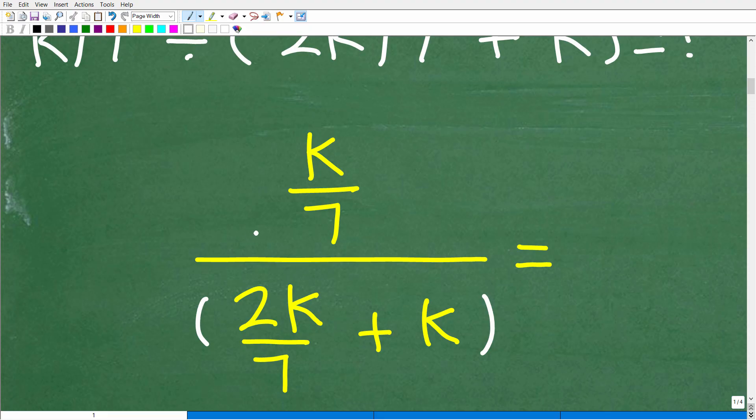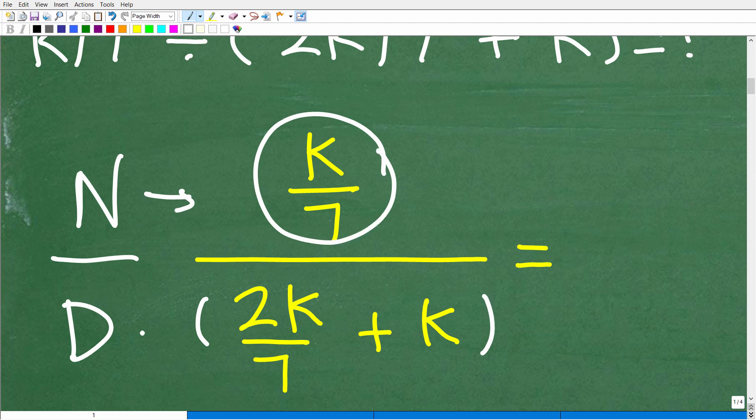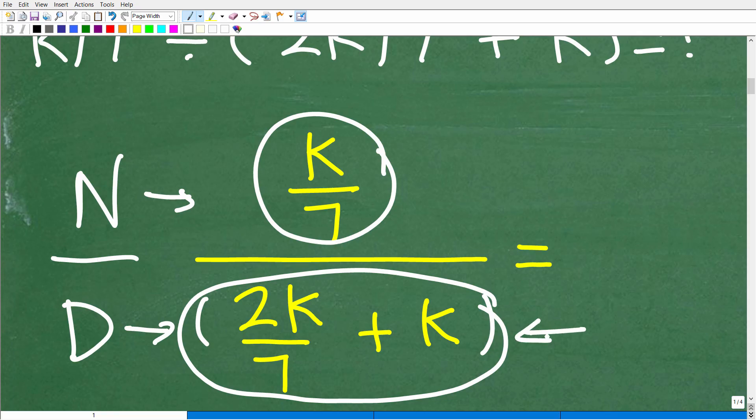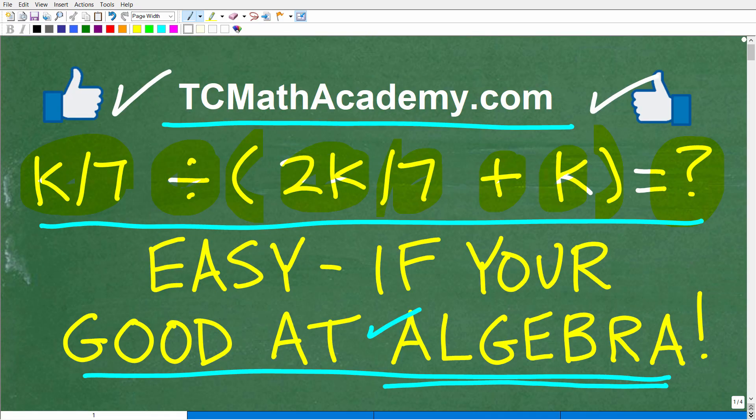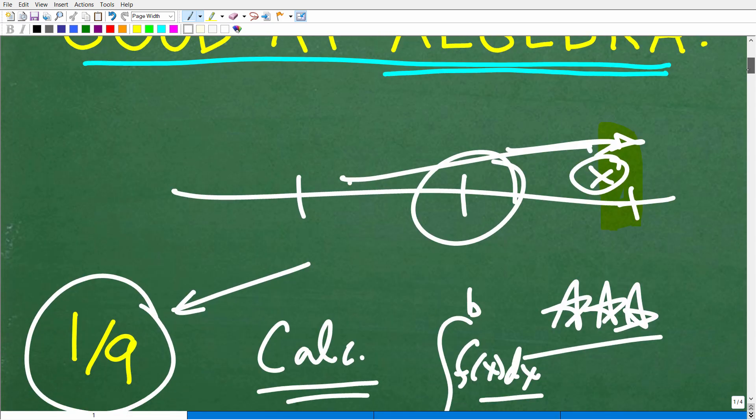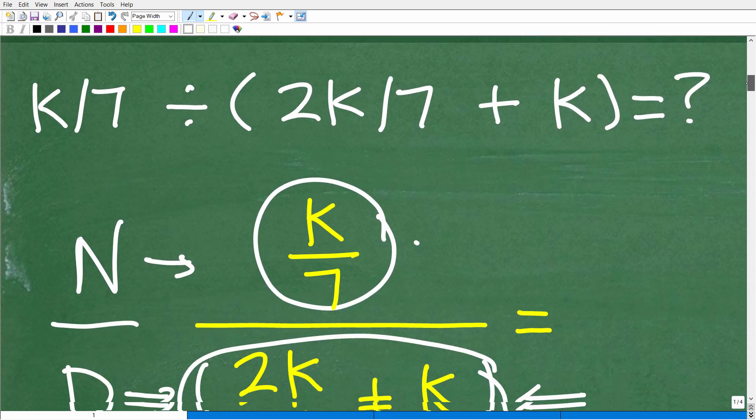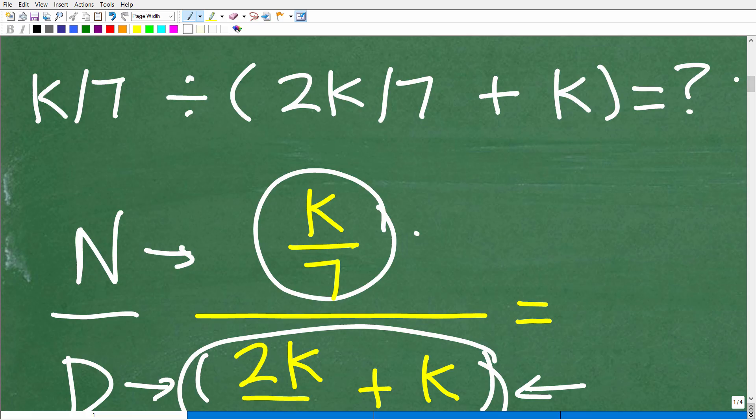Now I just threw in some grouping symbols to make this very explicit that we have this entire thing as the denominator. But the first thing you want to be able to do is to interpret a problem like this as a big complex fraction. It's a fraction problem, right? So here is our numerator, and we are dividing it by a denominator. The numerator is this, and the denominator is this whole thing. So you can see that we're going to have to work on cleaning up our denominator here before we can actually divide the numerator by the denominator.